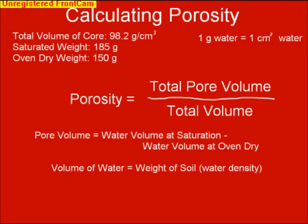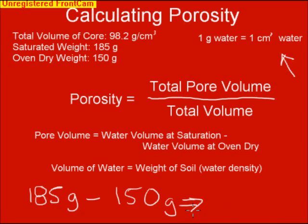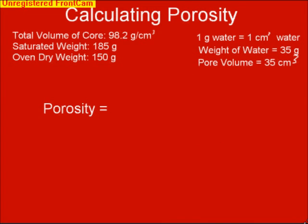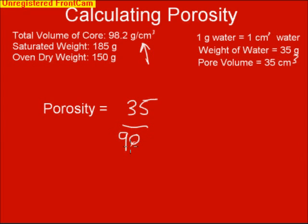Therefore, we know that our volume of water equals our weight of soil, and our 1 to 1 ratio is manifested in the density ratio. So our volume at saturation is 185 grams minus 150 grams, giving us a total pore volume of 35 grams, which equals 35 cubic centimeters.